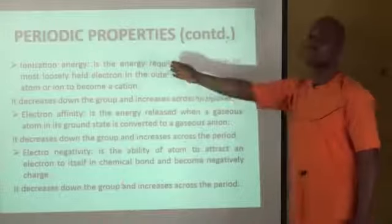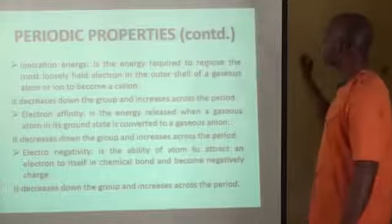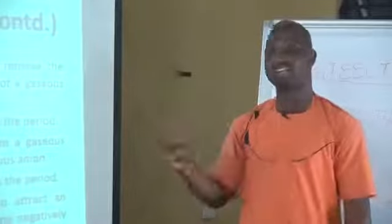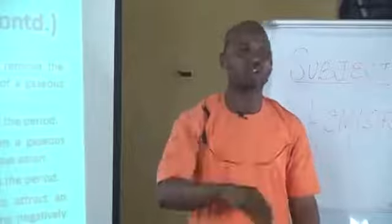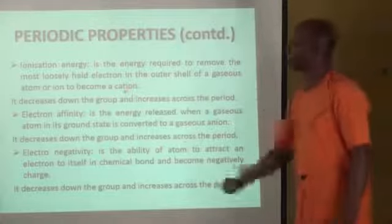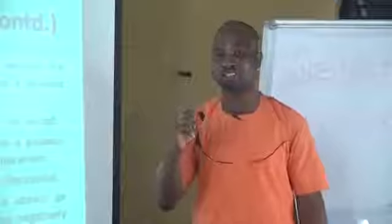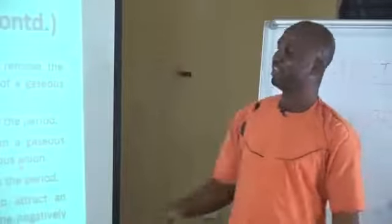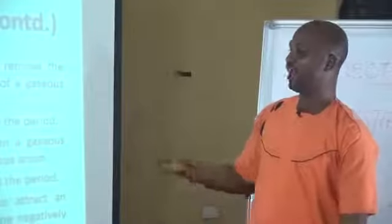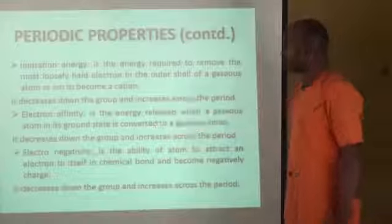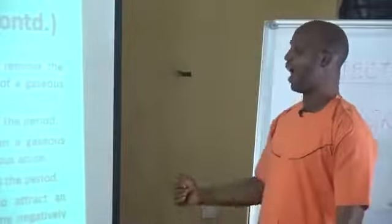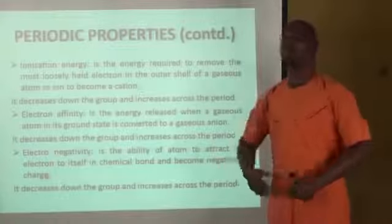Ionization energy is the energy required to remove the most loosely held electron in the outermost shell of a gaseous atom or ion in its ground state. These definitions are very important — they are either two marks or zero, it's either correct or incorrect. Ionization energy decreases down the group and increases across the period. Electron affinity is the energy released when a gaseous atom in its ground state is converted to a gaseous anion. Just like ionization energy, it decreases down the group and increases across the period, with halogens having the highest electron affinity as well as electronegativity. Electronegativity is the ability of an atom to attract electrons to itself in a chemical bond and become negatively charged — it decreases down the group and increases across the period.